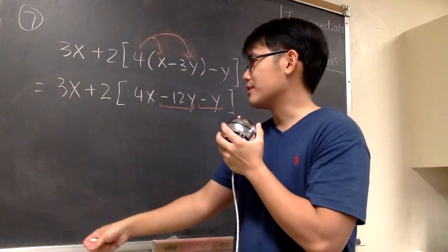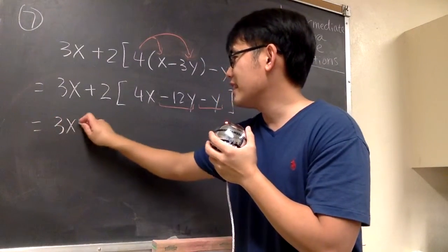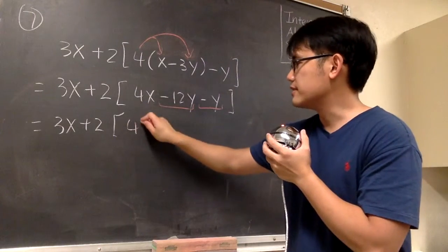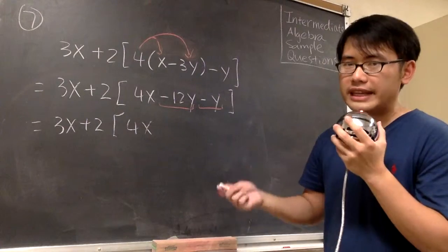So let me just write this down again, the 3x plus 2. Because we haven't done anything with it, and then we still open the bracket. The 4x stays the same. Negative 12y minus y, that will be negative 13y.